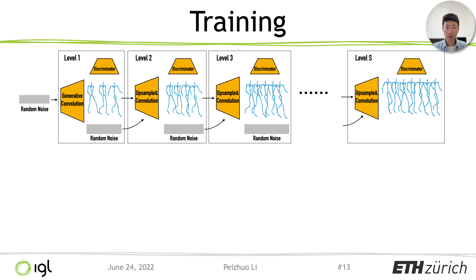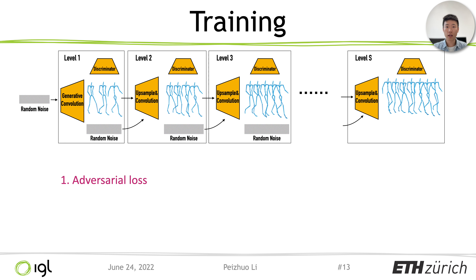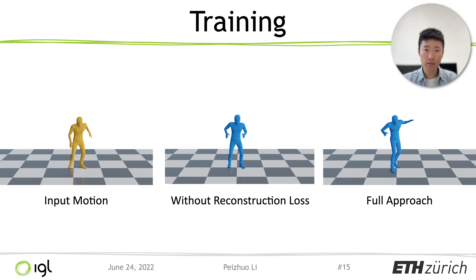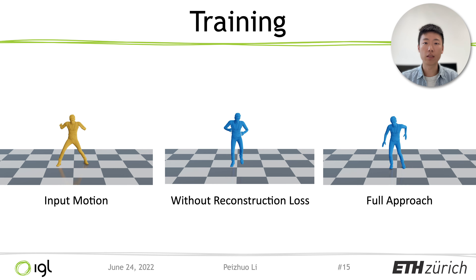During training we first use adversarial loss. The discriminators are patch-style, and the discriminator at each level handles a different level of detail from coarse to fine. The noise provides variation, but to improve quality and stabilize training, we enforce the network to reconstruct the training motion when a fixed noise is given at the first level and zero noise at the other levels, using a reconstruction loss.